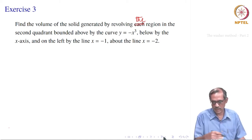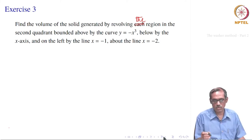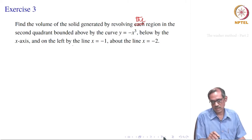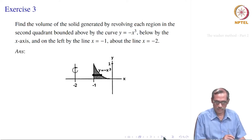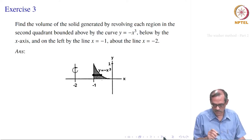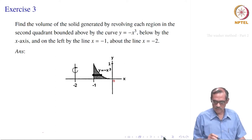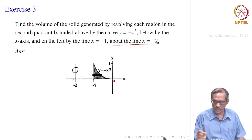The region is in the second quadrant, bounded by the negative x axis, and on the left by the line x equal to minus 1. The region is to be revolved about the line x equal to minus 2. So that is how it looks: y equal to minus x cubed in the second quadrant, with minus 1 and minus 2 on the x axis.